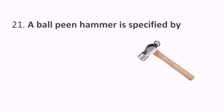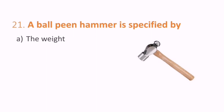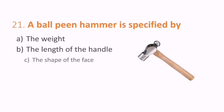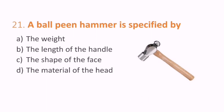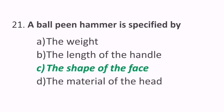Twenty-first question: a ball peen hammer is specified by what? Options are weight, length of the handle, shape of the face, or material of the head. The correct answer is shape of the face. C is the correct answer.